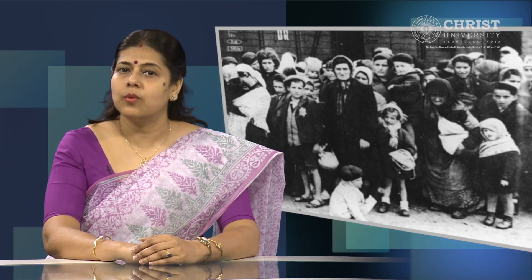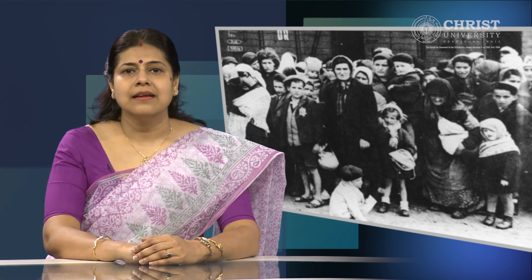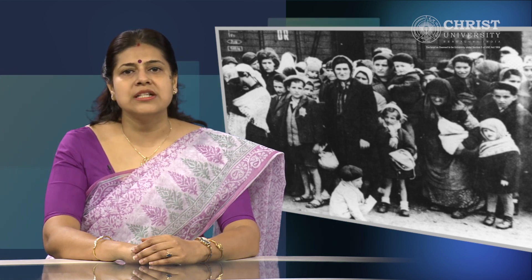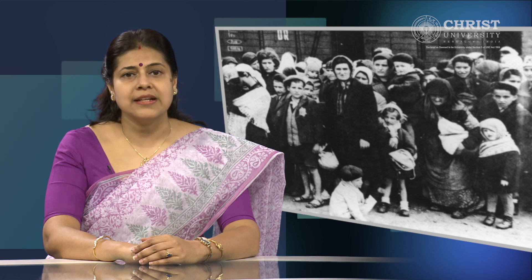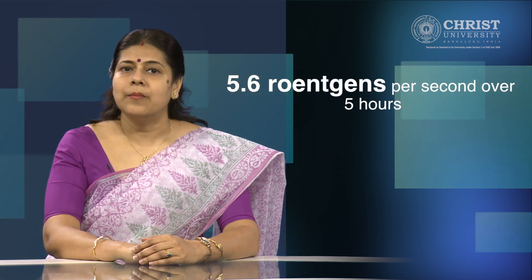People were evacuated the day after the explosion. A month later, 116,000 people in an 18-mile radius of the plant were evacuated. Over 3,000,000 people were moved from the accident site. Many still live in contaminated areas and the long-term effects are not yet known. The radiation levels in the worst-hit areas of the reactor building were estimated to be 5.6 roentgens per second over 5 hours, meaning unprotected workers received fatal doses in less than a minute.